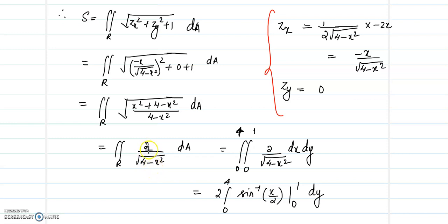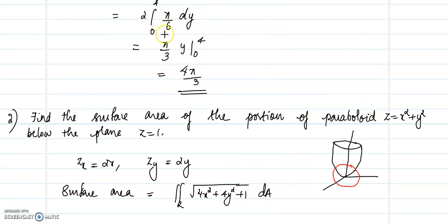So the surface area becomes the double integral over R of 2/√(4−x²) dA, where x varies from 0 to 1 and y varies from 0 to 4. The integral of 1/√(4−x²) with respect to x is sin⁻¹(x/2). Applying limits from 0 to 1 gives sin⁻¹(1/2) − sin⁻¹(0) = π/6. So we get 2·(π/6)·∫₀⁴ dy.